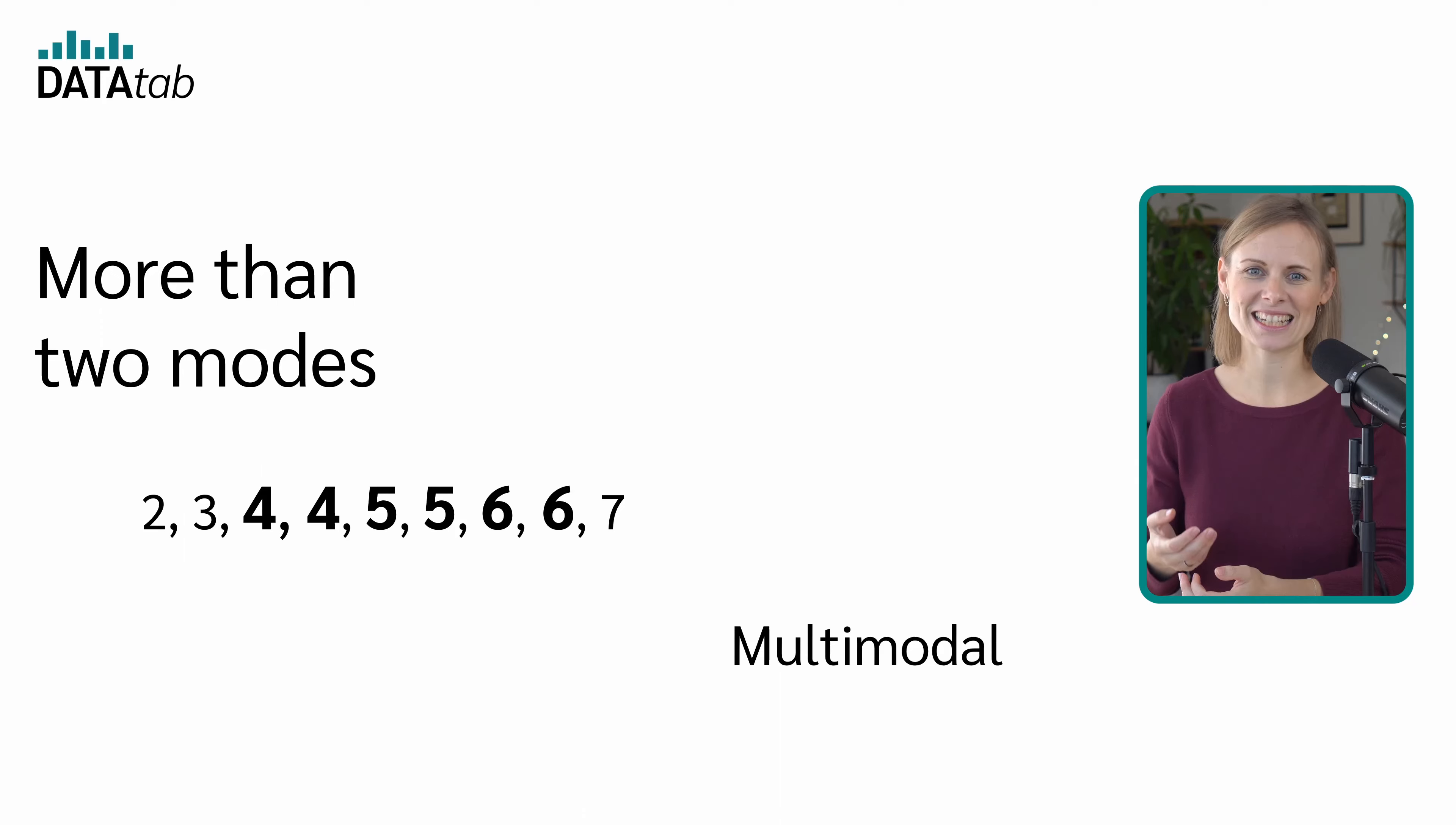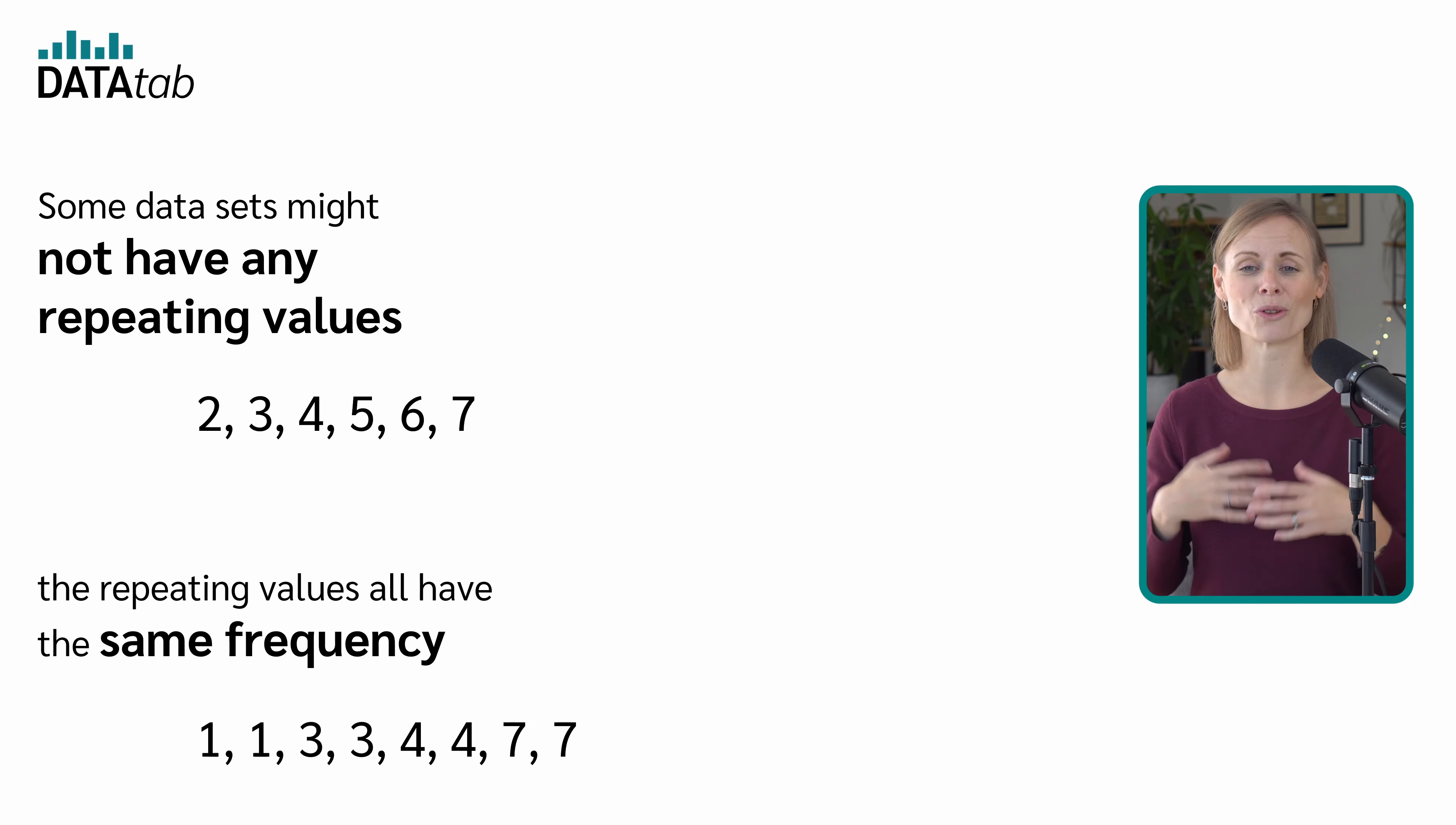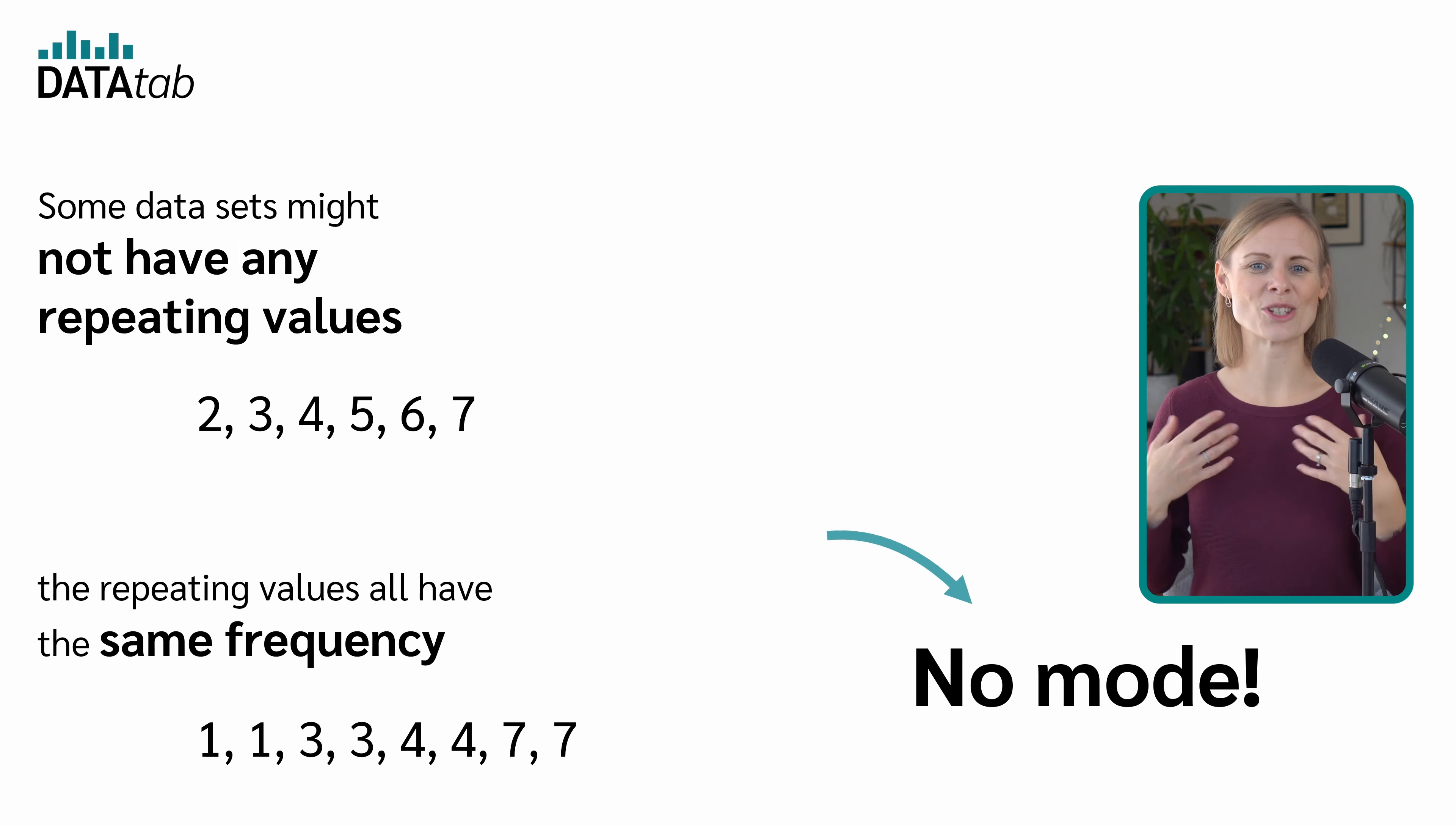Of course, a dataset can also have more than two modes. If it has multiple values that appear most frequently, it is termed multimodal. And some datasets might not have any repeating values or the repeating values all have the same frequency. In such cases, the dataset has no mode.